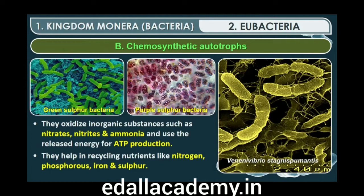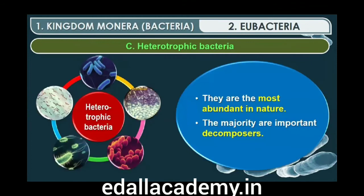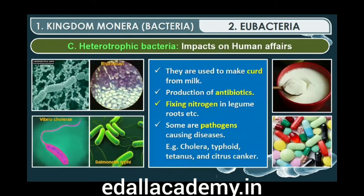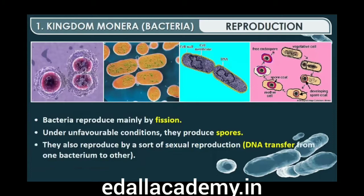Heterotrophic bacteria are the most abundant in nature. The majority are important decomposers. Many have a significant impact on human affairs — they are helpful in making curd from milk, production of antibiotics, and fixing nitrogen in legume roots. Some are pathogens causing damage to human beings, crops, farm animals and pets. Cholera, typhoid, tetanus and citrus canker are well-known diseases caused by different bacteria. Bacteria reproduce mainly by fission. Sometimes, under unfavorable conditions, they produce spores. They also reproduce by a sort of sexual reproduction, adopting a primitive type of DNA transfer from one bacterium to the other.